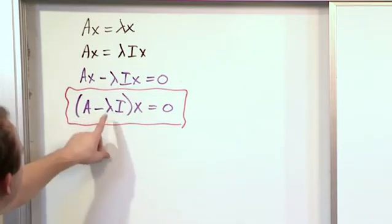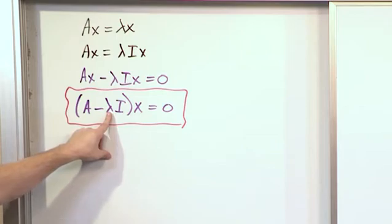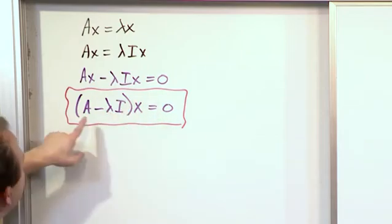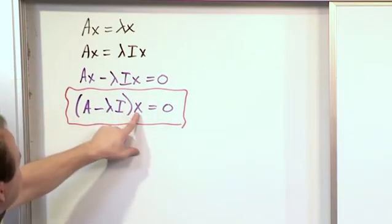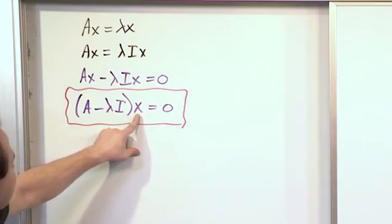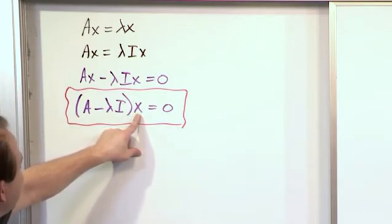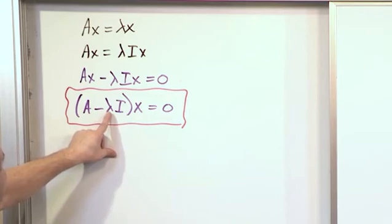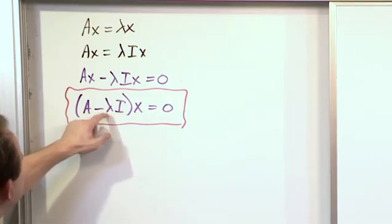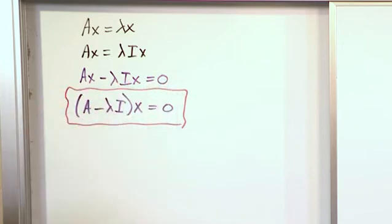What we want to do is find out what values of lambda make this equation true. We know that there's going to be some eigenvectors that are going to pop into here. That's also the other part of what we want to find. But before we can find those, we want to find the eigenvalues. So what we want to figure out is what values of lambda make this equation work out. What values of lambda make them have non-trivial solutions, in other words.